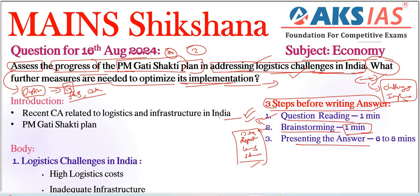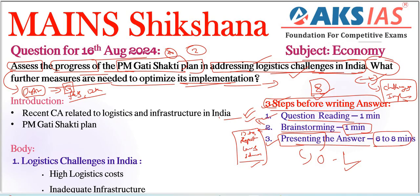Coming to presenting the answer, we can complete writing in six minutes. We have already taken two minutes, so for writing one answer we can take almost a total of eight minutes — that is our strategy using three steps before writing. For the presentation part, we can use some flow charts, and from an economy point of view we can use some graphs. We can start with a current affairs introduction, and we also need to connect the static part. Recent current affairs related to logistics and infrastructure in India are very important here.